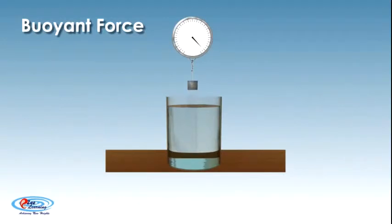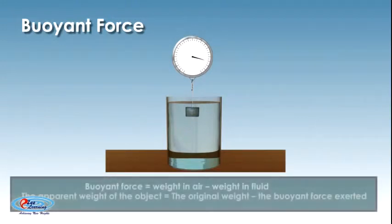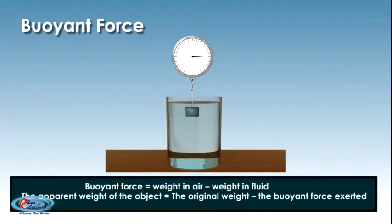The apparent weight of the object equals the original weight minus the buoyant force exerted. Buoyant force equals weight in air minus weight in fluid.